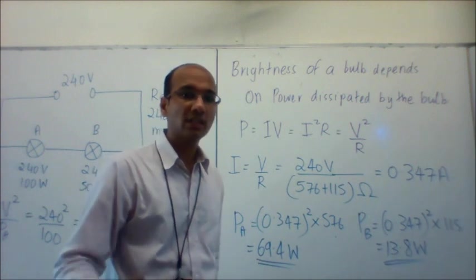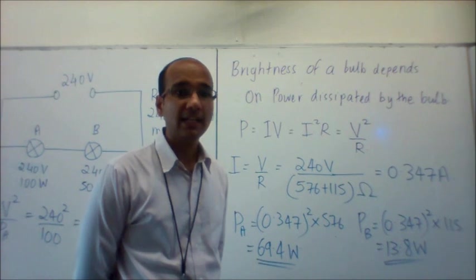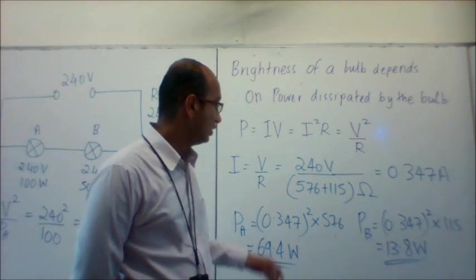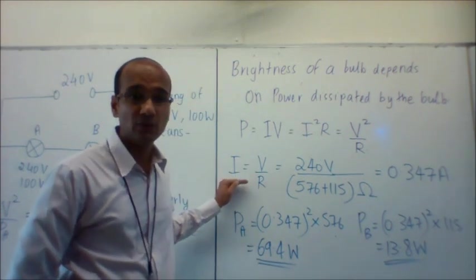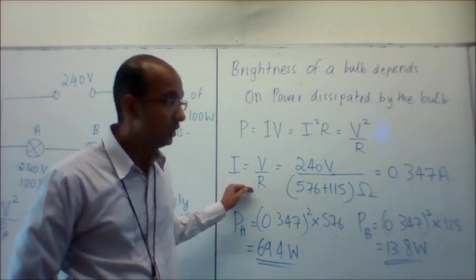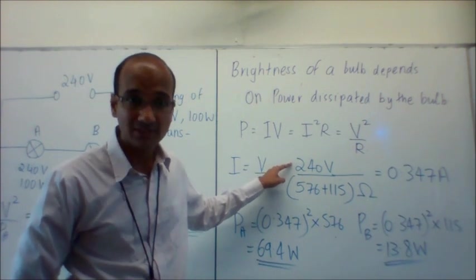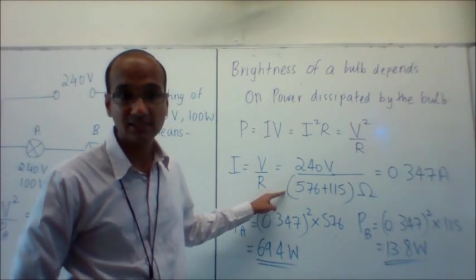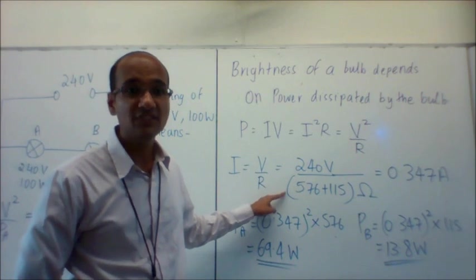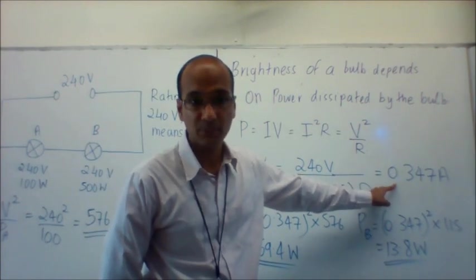I can work out the current easily using the I equals V over R formula. I'll use the total values in this circuit: the total potential difference of 240 volts over the total resistance. This gives a current of 0.347 amperes.